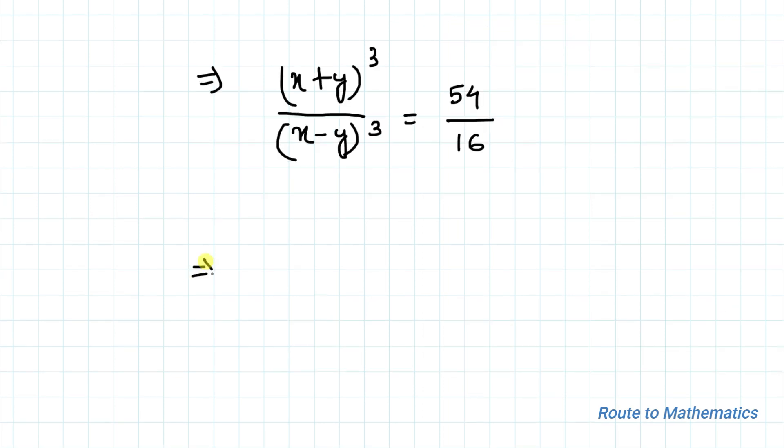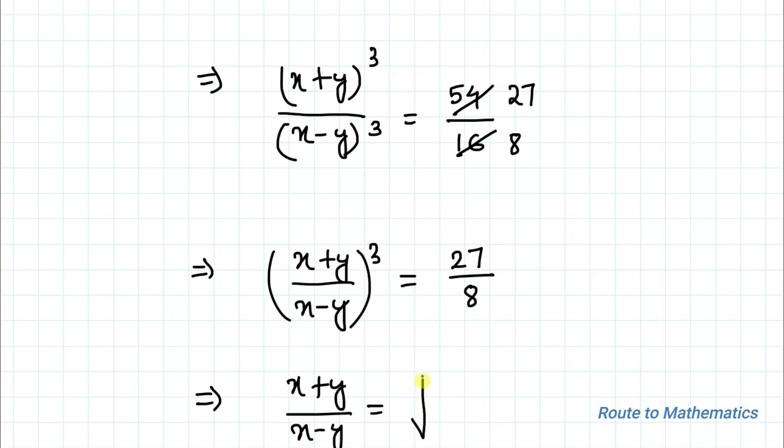This implies ((x+y)/(x-y))³ equals 27/8, so we have 27 divided by 8, which implies (x+y)/(x-y) equals the cube root of 27/8.